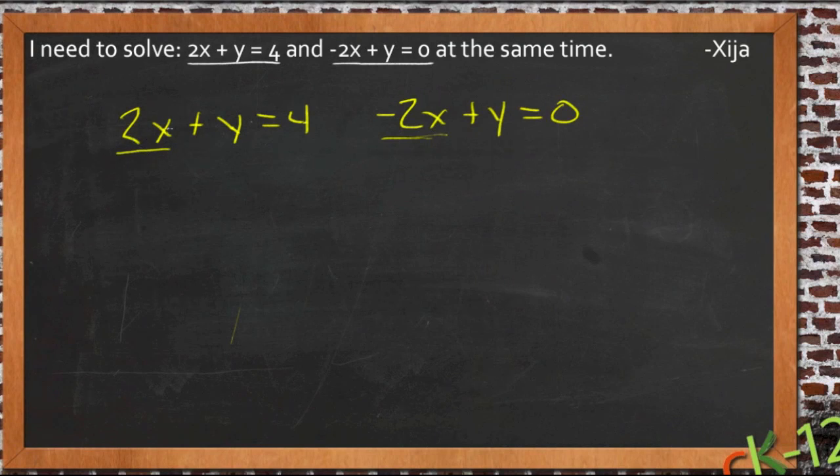We already know, here we have positive 2x and here we have negative 2x, that those two things are opposite each other. So what we need to do then is take one of these equations and add it to the other one. And what I mean by that is we're going to take this negative 2x plus y and we're going to add it to this other equation. We're going to add it to this side, the left-hand side, of our other equation. When we do that, those two x's are going to get rid of each other.